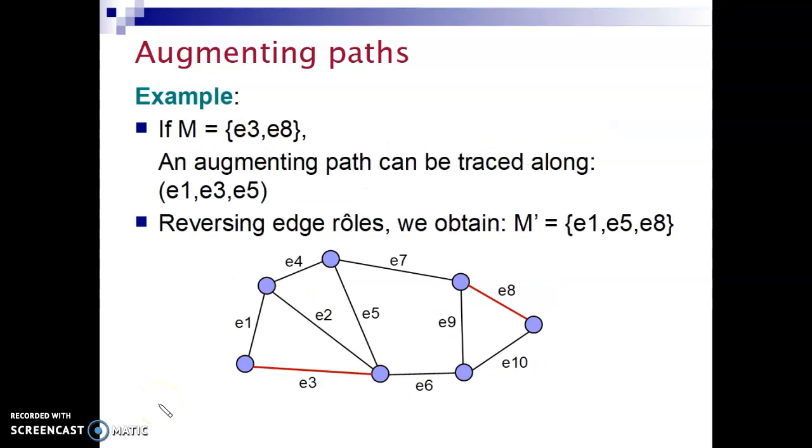So what does that example mean? Let's talk on a more general graph, like in here. Seven nodes, several edges. And here we have a matching already. E3 and E8 form a matching of cardinality 2. It has two edges.